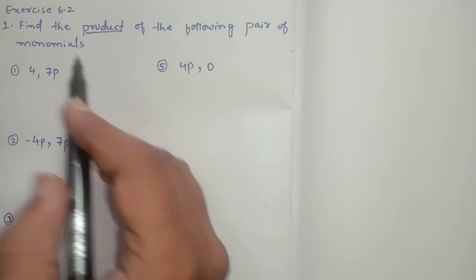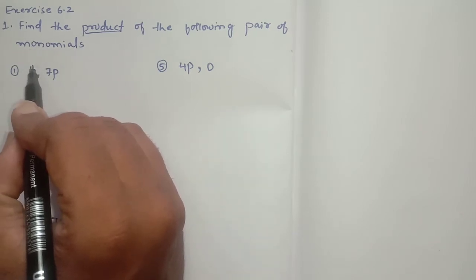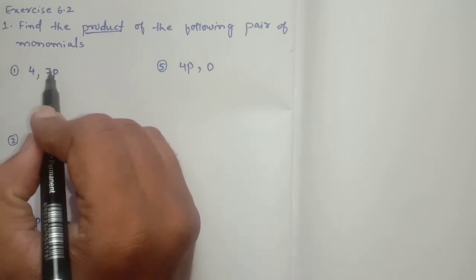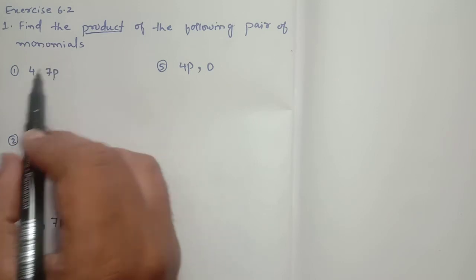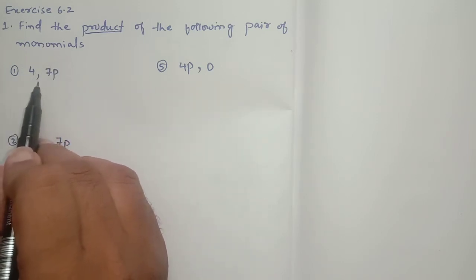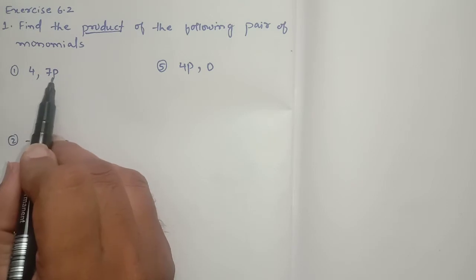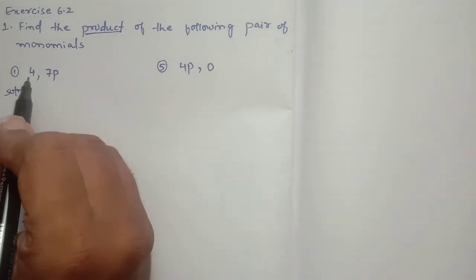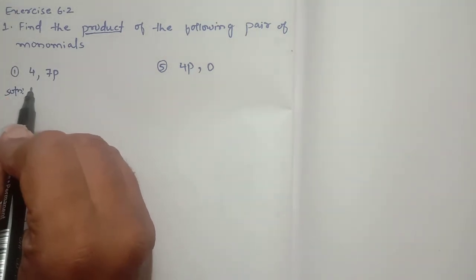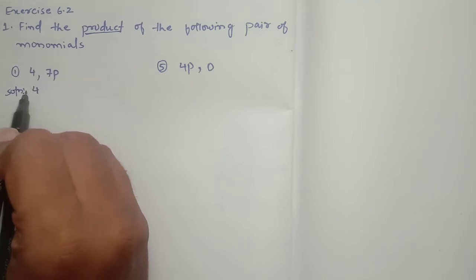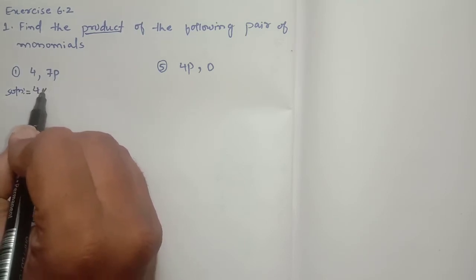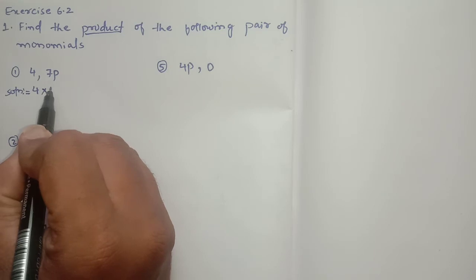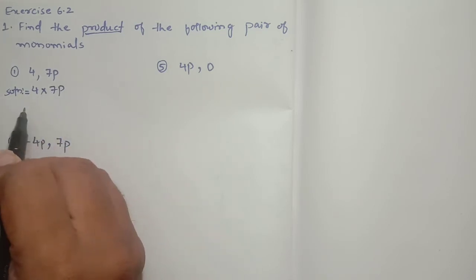4 is one monomial in the first question and 7p is another monomial. We have to find the product of it. Product means we have to multiply. Solution: product of these two monomials, the first monomial into second monomial, 4 into 7p.